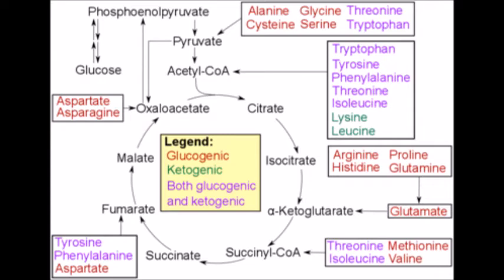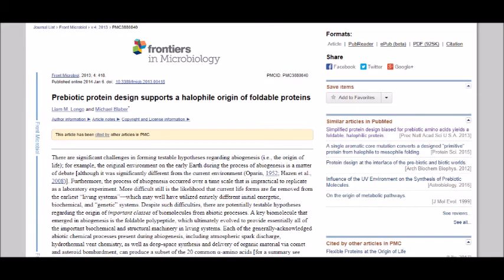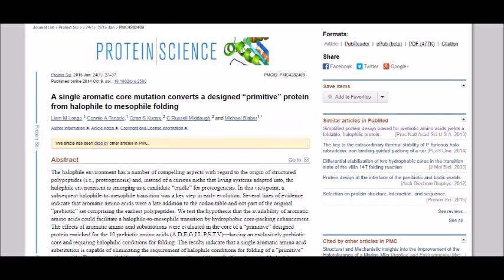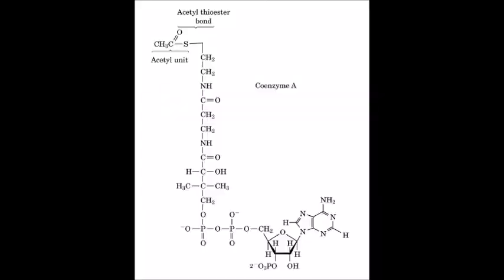Creationists seem convinced that proteins couldn't possibly form, a process called proteogenesis, but research by Liam Longo has shown that this pessimism is misplaced. See the 2013 paper, Simplified Protein Design Biased for Prebiotic Amino Acids yields a foldable halophilic protein. The 2013 paper, Prebiotic Protein Design Supports a Halophile Origin of Foldable Proteins. The 2015 paper, A Single Aromatic Core Mutation converts a designed primitive protein from halophile to mesophile folding. And the 2016, Evolution of a Protein Folding Nucleus.